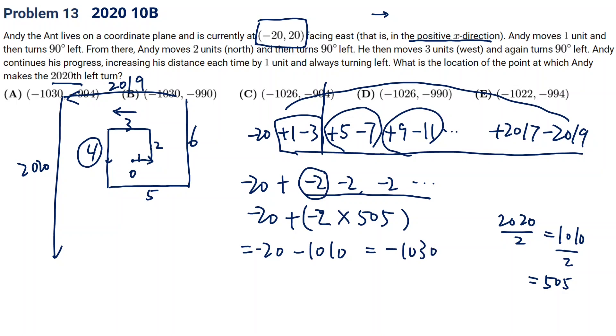Vertically, same idea. We start with 20. And it's going to be plus 2, minus 4, plus 6, minus 8. Until we do plus 2018, minus 2020. The same idea.